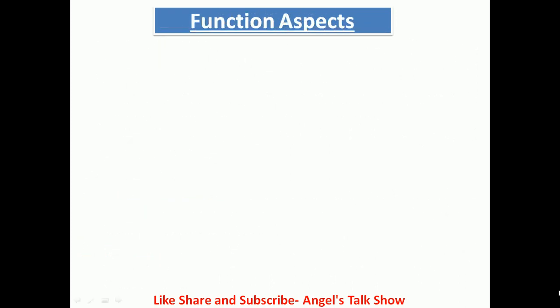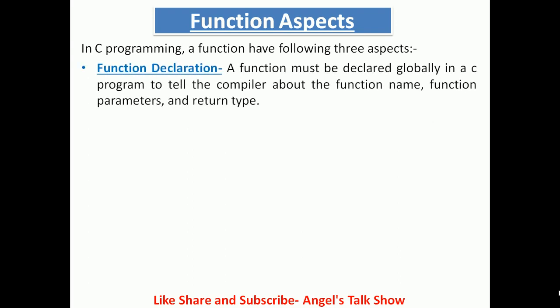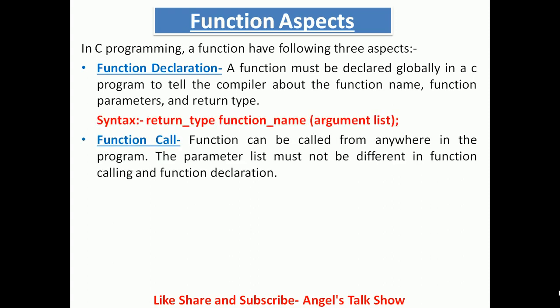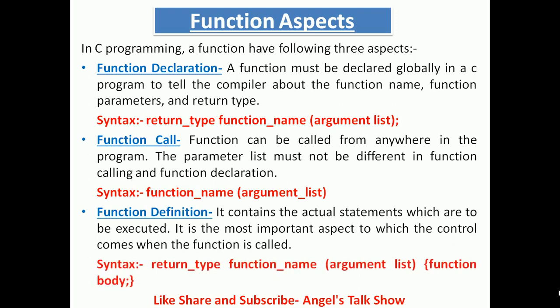Now in the next slide we will discuss about function aspects in C programming. A function can have the following three aspects: the function declaration, the function call, and the function definition. These three aspects are very important for any function. In the function declaration, a function must be declared globally in a C program to tell the compiler about the function name, its parameters, and return type. The syntax of function declaration is shown here.